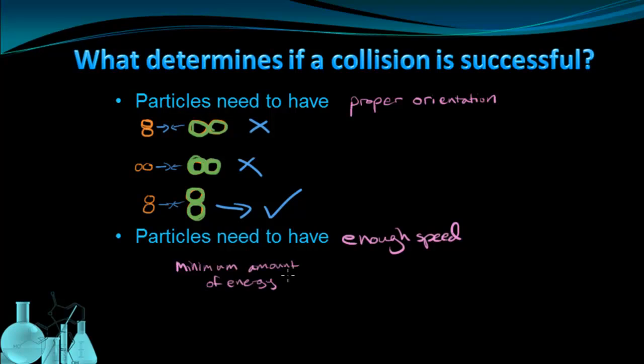The particles that collide need to have a minimum amount of energy. So they could have more than enough energy, and that would be fine. But there's a minimum amount of energy that they need to have when they collide for the successful collision. And this minimum amount of energy is called the activation energy. And activation energy is represented with the symbol EA. This is the symbol for activation energy.